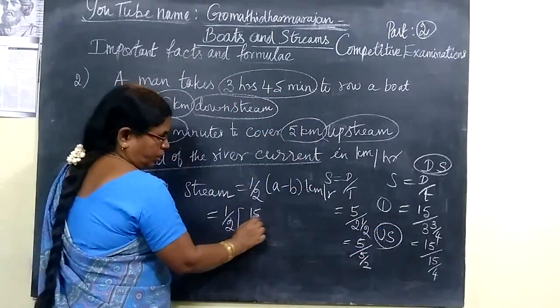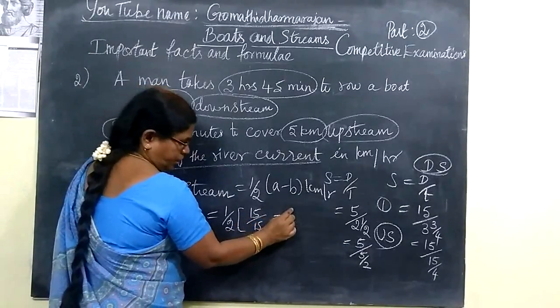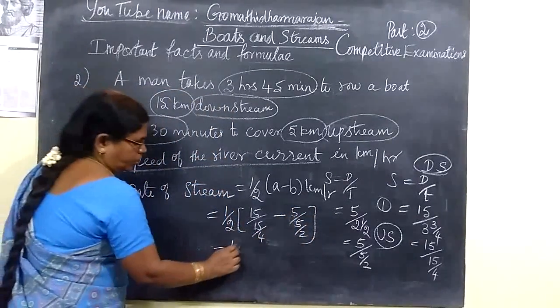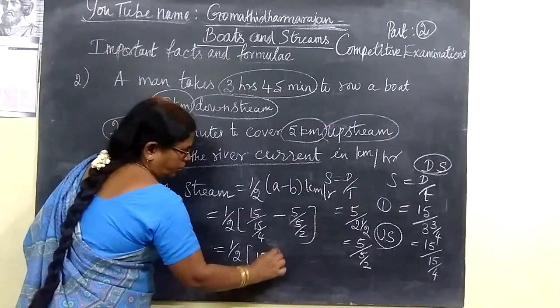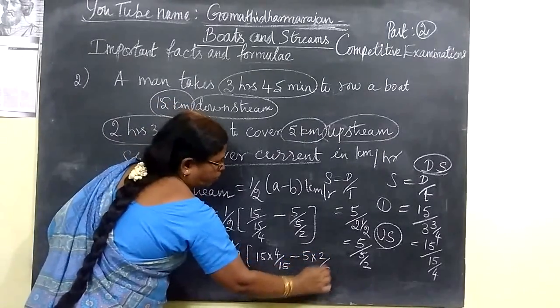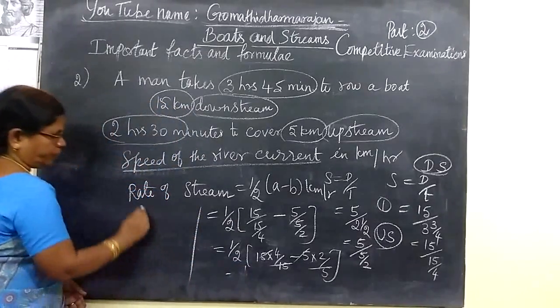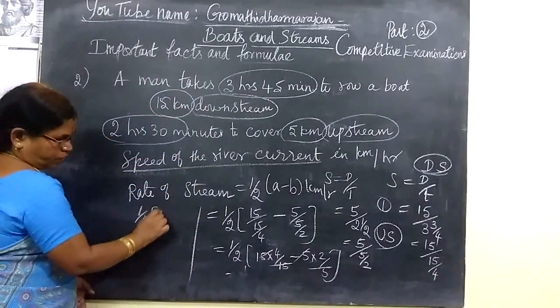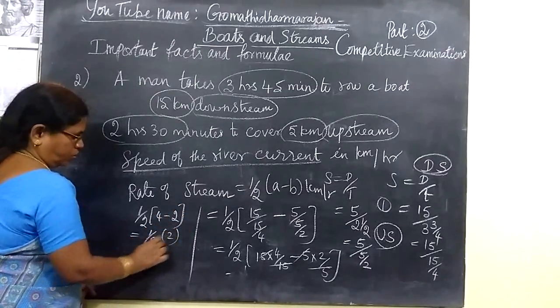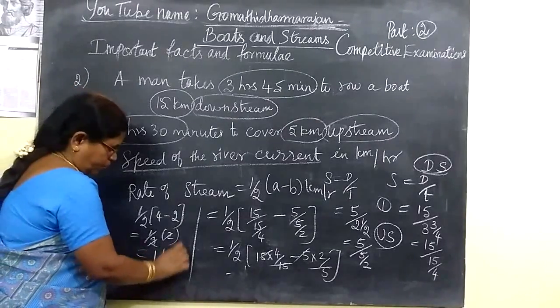So you write 15 by, minus 5 by 5 by 2. So this is equal to half bracket, 15 into 4 by 15 minus 5 into 2 by 5. So this one you can cancel. So half bracket, here 4 minus 2. So this one 2, so 1. What is the unit? Unit is kilometer per hour.